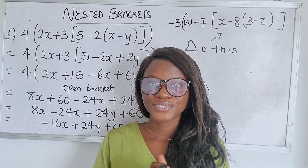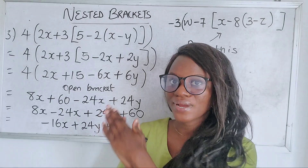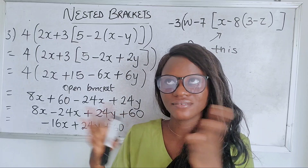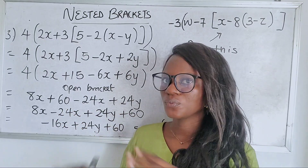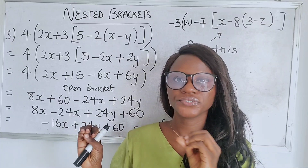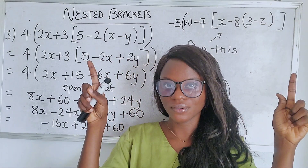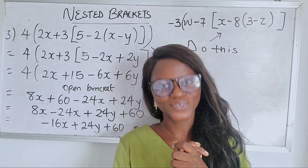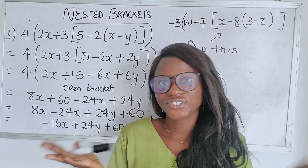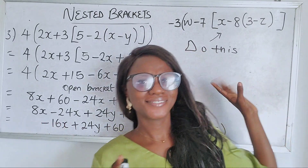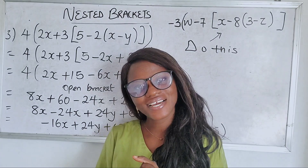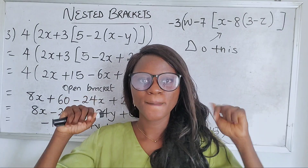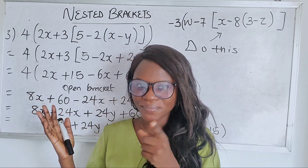To summarize: a nested bracket is a case where you have two or more brackets together in a given expression or equation. To solve such expressions, you start with the innermost bracket and work your way outward to expand all your brackets. Don't forget to subscribe, share so others can learn, and leave your answers in the comment section. We're also on every other platform — check the description box. Don't stop learning, bye!